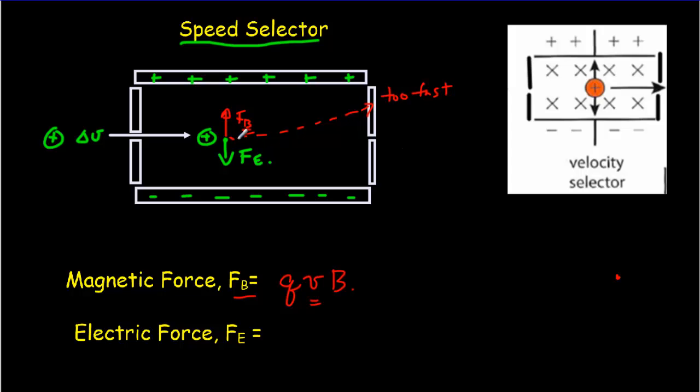And if they're going too slow, of course they're going to be deflected downwards because the electric field is going to be bigger. And it's only if the two forces are exactly equal that they're going to make it through this hole here and enter the next region, region 4 of the mass spectrometer.